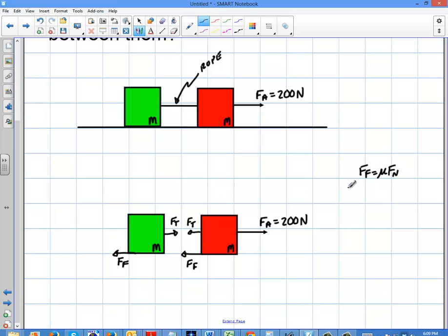And in this case, the normal is just going to be mg. So the force of friction is going to be mu mg. And so what does that mean?